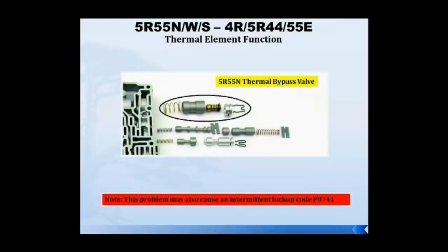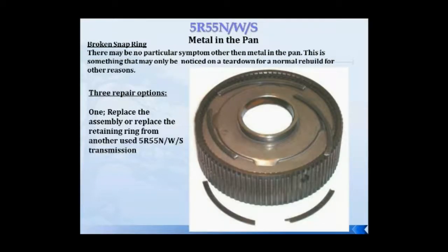We've also had some issues with broken snap rings on these forward transmissions. The problem comes down to hardening issues with the snap rings themselves — simply replace the snap ring. If you can't find or don't have access to the specific snap ring, some Torque Flight 6 snap rings can substitute as a replacement.